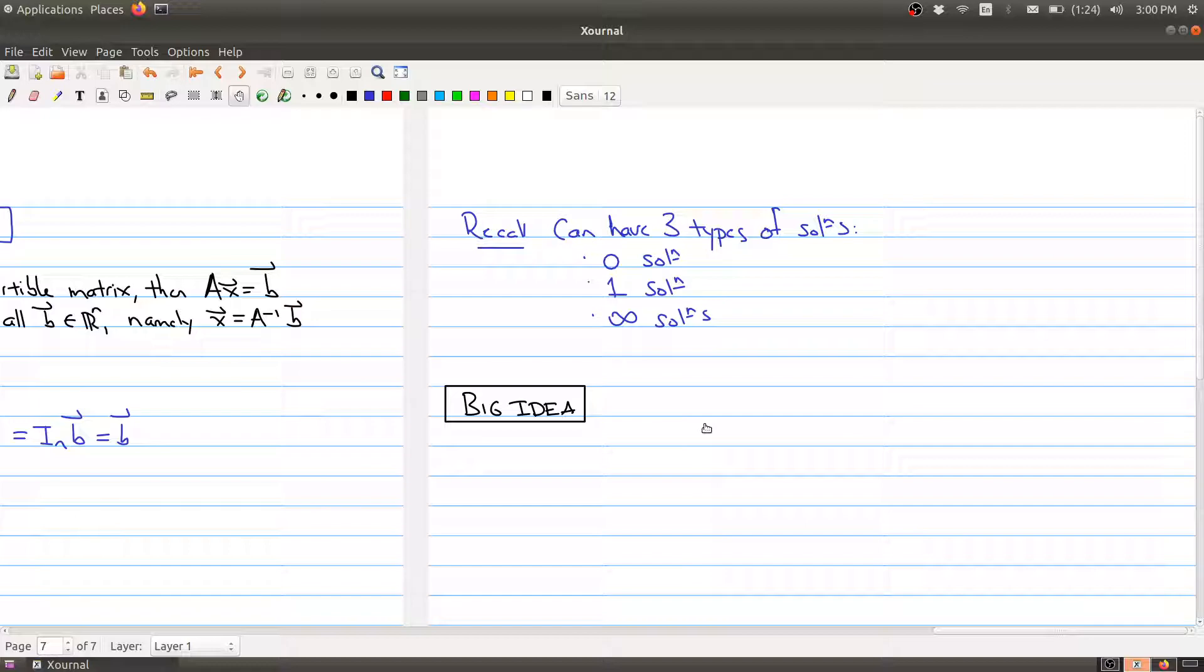When you have a system of linear equations, we talked about this a couple of times, you can have three types of solutions. You can have those system of linear equations with zero solutions, those with one solution, and those with an infinite number of solutions. And the big idea that you want to take away from today's lecture is that the number of solutions is related to the invertibility.